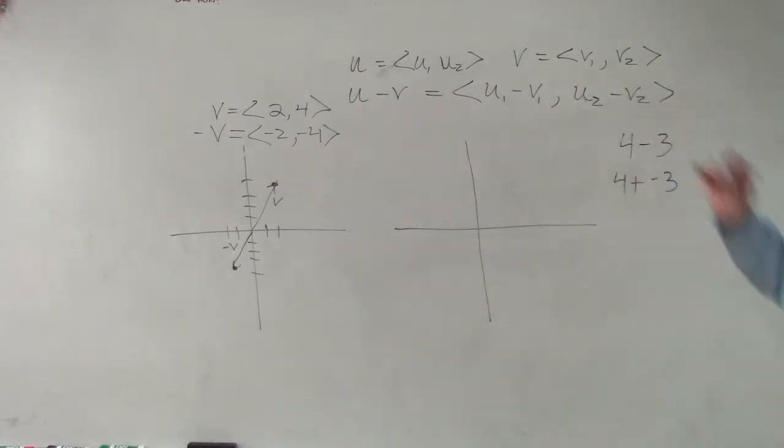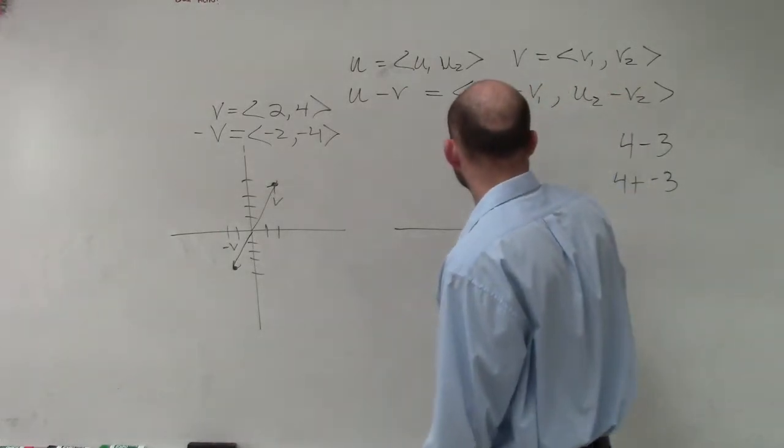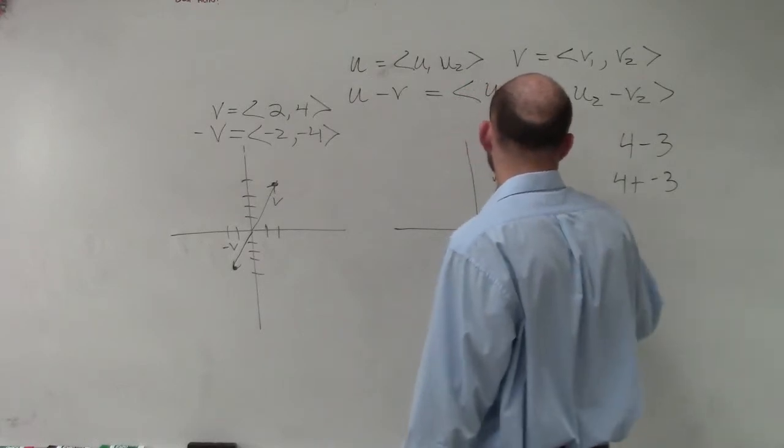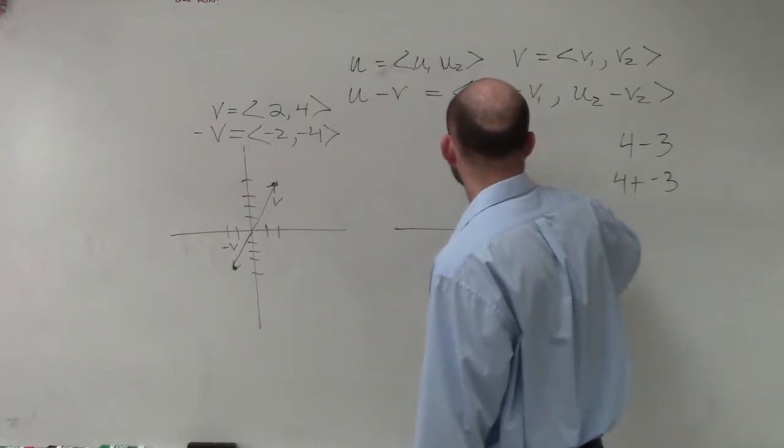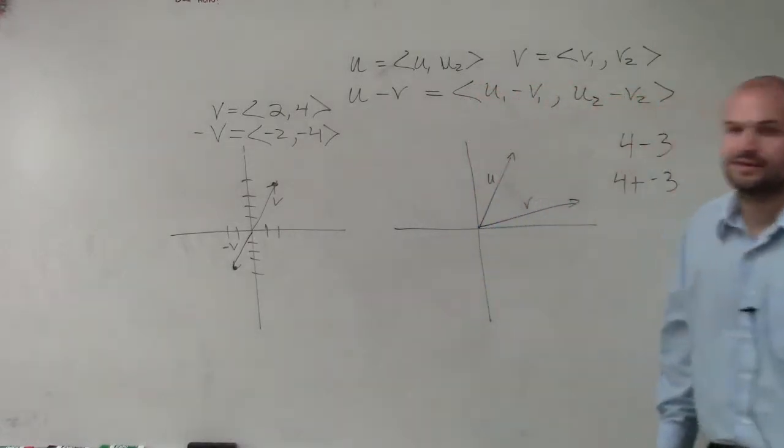So, if I have my u and my v, right? And let's just say, let's say here's vector v, and then here's vector u. Or, we said this was u and that was v, right? Okay.